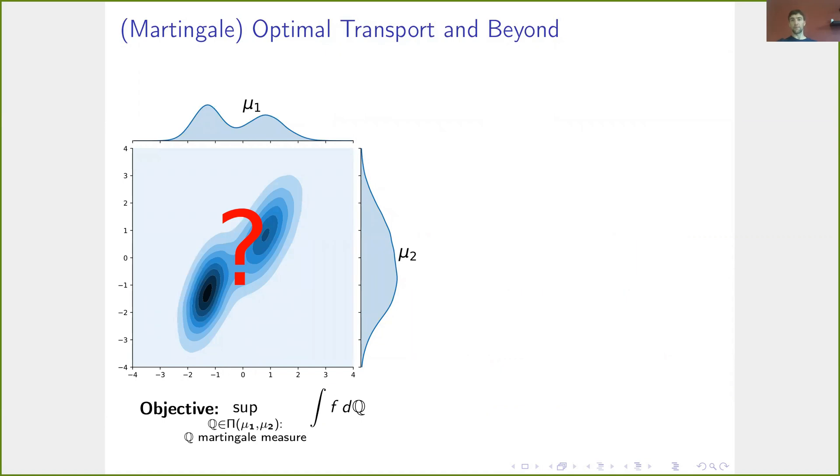So for instance, in two time points, how does this optimization problem to calculate the highest possible price among such models look like in the martingale transport problem? Well, we know the two one-dimensional marginal distributions, but we don't know their joint distribution. We only know that it has to induce a martingale.